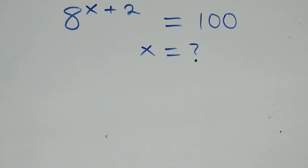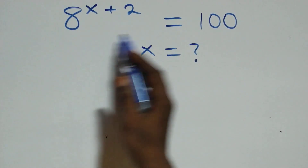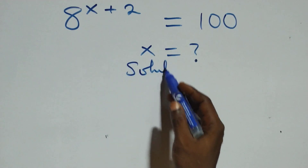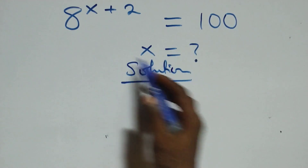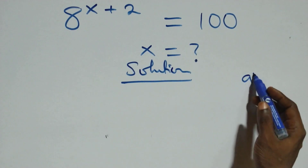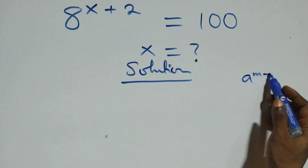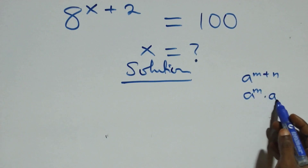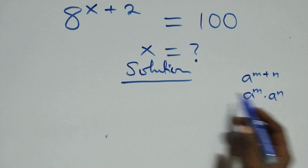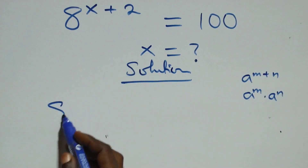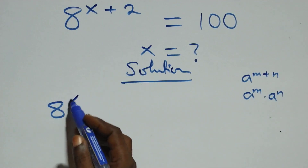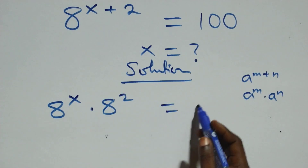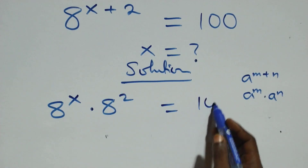Hello, you are welcome. How to solve this nice exponential equation. From what we have here, this follows: a raised to power m plus n, which is the same thing as a raised to power m times a raised to power n. As is here, this becomes a raised to power x times h squared, then equals the right-hand side.